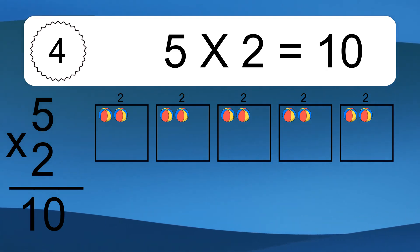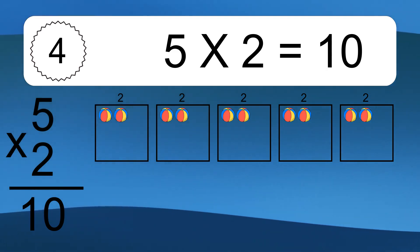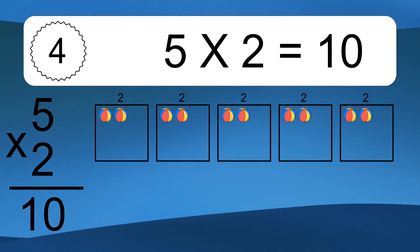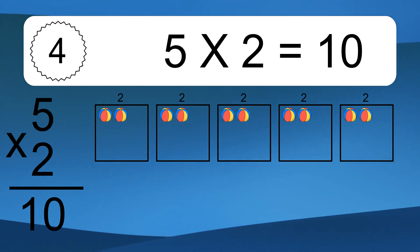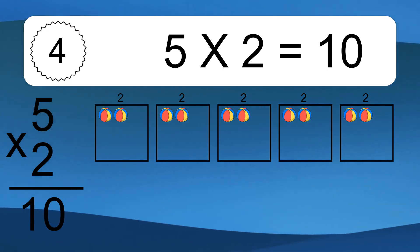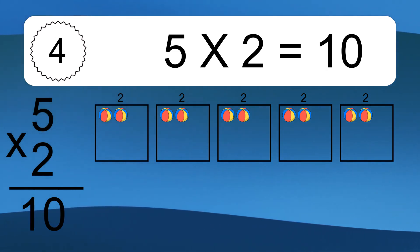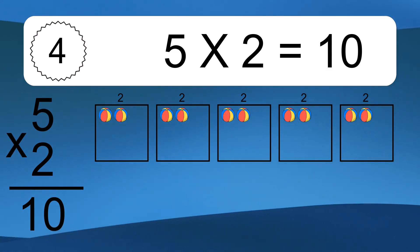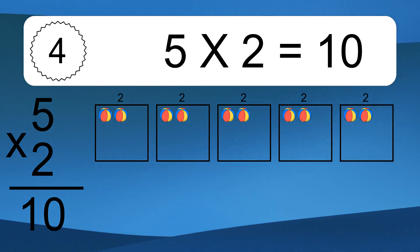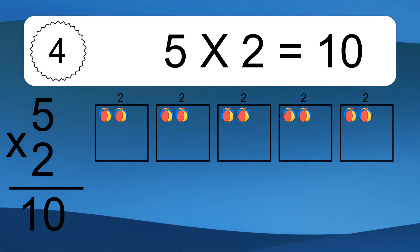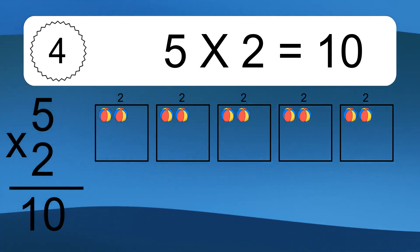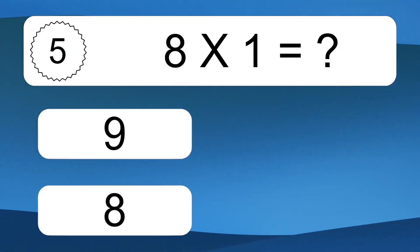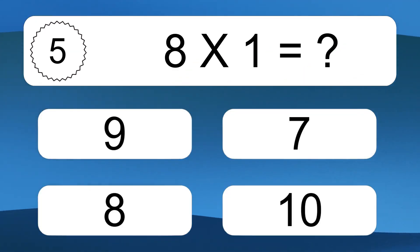5 times 2 equals what? We have 5 boxes, and each box has 2 colorful balls inside. If you count all the balls in all the boxes together, you will have 5 times 2 balls. This equals 10 balls.